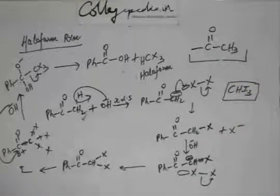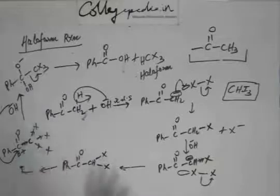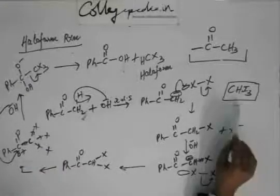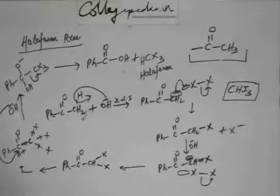So this reaction generally is done in the form of Iodoform, not chloroform, not Bromoform, but Iodoform because this is yellow in color. So the bottom line of the whole discussion is Iodoform reaction, we do instead of chloroform and Bromoform because Iodoform is yellow in color.